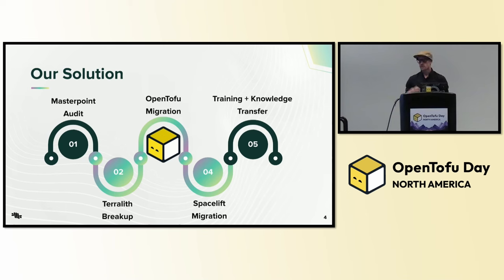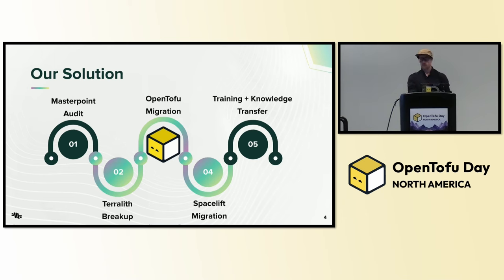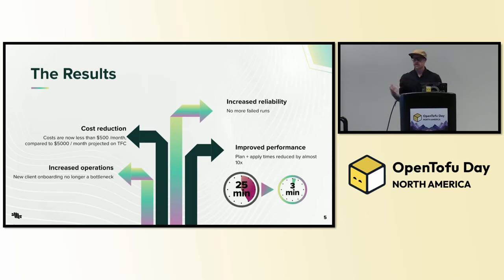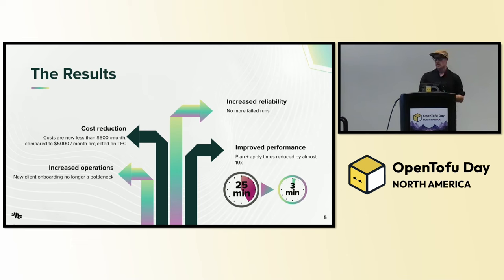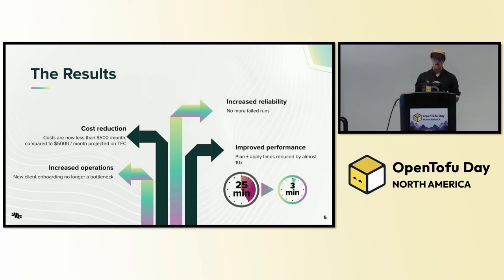After all of those things, we did some training and knowledge transfer. As we implemented this solution, we got some really awesome results. First thing out of the gate — that 10x cost increase — we kept that in control. Their projected cost increase on Terraform Cloud was going to be $5,000 a month. Their costs are now less than $500 a month. Huge win. The client was extremely happy.